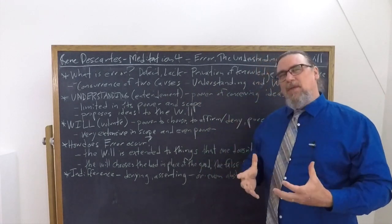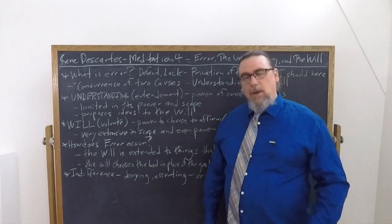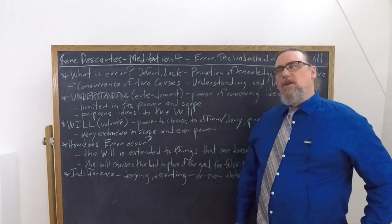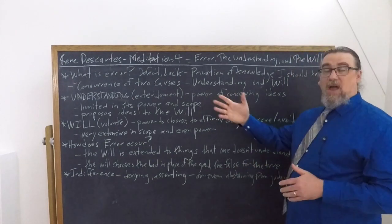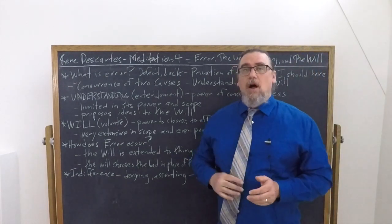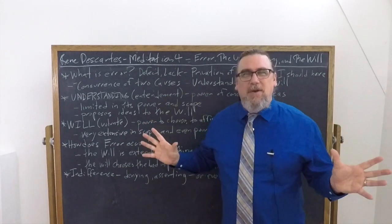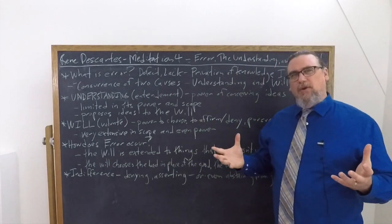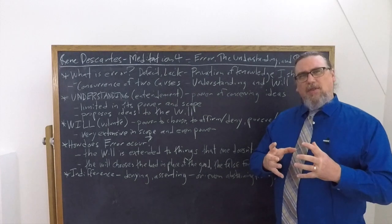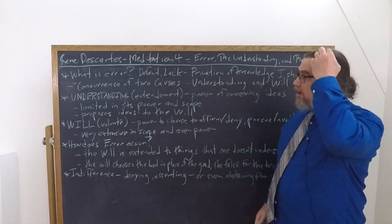Our will by itself doesn't actually have limits. And we might want to think about what could provide the will with limits, whereas the intellect or the understanding, all sorts of limits. There's all sorts of things that we don't know, all sorts of things that we'll never know. So we've got these two faculties, and they're quite different from each other, but they're working together all the time. Here's how we get to the source of our errors. How does error actually occur?